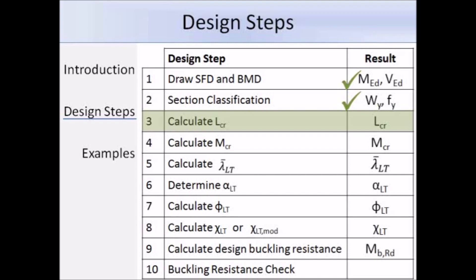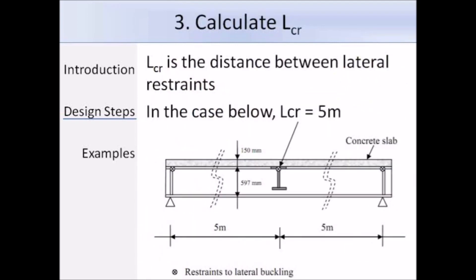The next step is to work out L_CR, which is the distance between points of lateral restraint. This step is very easy. In this screenshot taken from an example from the Access Steel website, you should be able to work out quite easily that the value of L_CR is 5 metres.